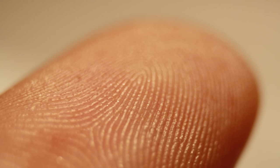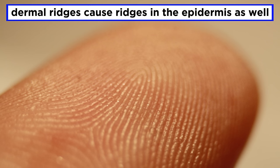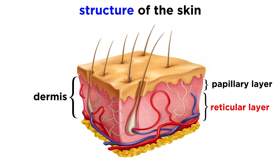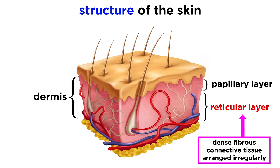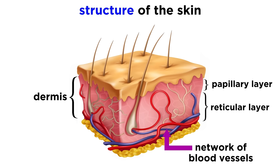In areas where there is lots of friction, like the hands, these papillae sit on mounds called dermal ridges, which cause ridges in the epidermis as well, which are meant to enhance the gripping ability of the fingers, and they are visible as the lines on our fingertips that make our unique fingerprints. Below this papillary layer sits the reticular layer, which is most of the dermis, and it is made of dense fibrous connective tissue that is arranged irregularly. A network of blood vessels sits below this just before the hypodermis.